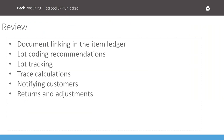As a review of what we covered today: we looked at document linking in the item ledger entry — how things are linked through lot number and document number combinations so the system can determine what items went into a WIP product and then into a finished good, all linked through the production order document number. We discussed lot coding recommendations and number series — ensuring those are alphanumeric and unique across the system. We also covered the item tracking code, seeing how lots are tracked and enforcing lot numbers on all required transaction types.